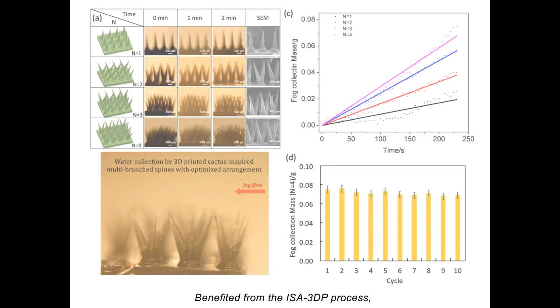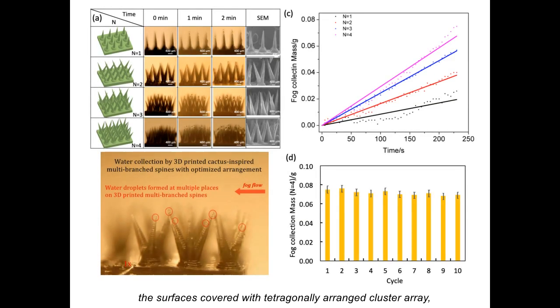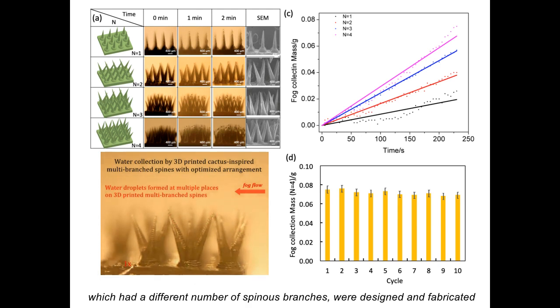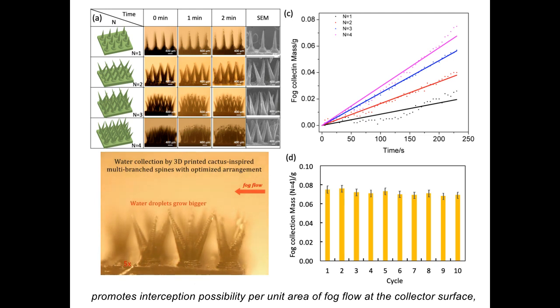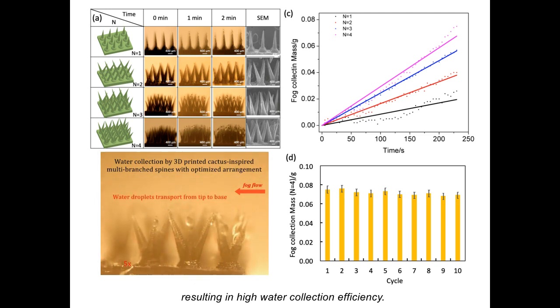Benefited from the ISA3DP process, the surface is covered with tetragonally arranged cluster arrays, which had different numbers of spinous branches. The clusters array with multiple branched spines promotes interception possibility per unit area of fog flow at the collector surface, resulting in high water collection efficiency.